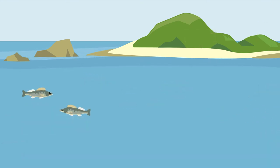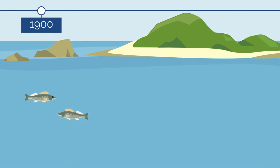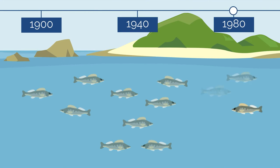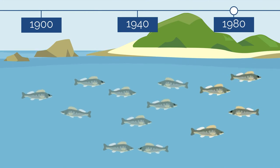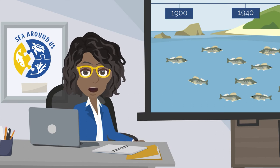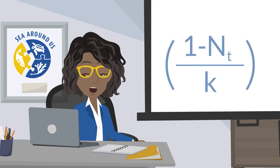The logistic equation features realized population growth rates dn over dt, which are low at low population sizes, high at intermediate population sizes, and low again when the population approaches carrying capacity. The realized population growth rates can be understood as surplus production, which enables a population to recover after an external factor, such as fishing, reduces the population. If the population's growth were not limited — which is what the term 1 minus nt over k tells us — it would increase forever.